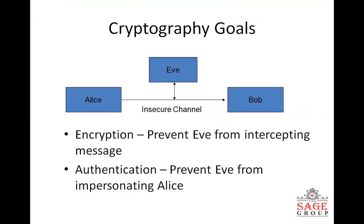The cryptography goal can be illustrated with this scenario: there are two kinds of users — one is called Alice and another is called Bob. Alice wants to send data to Bob, but in between, Eve — a cyber attacker, an unethical hacker — accesses the channel and the data, making it an insecure channel. Encryption prevents Eve from intercepting messages, meaning Alice uses encryption to cover her data so that only Bob can understand it, not Eve.